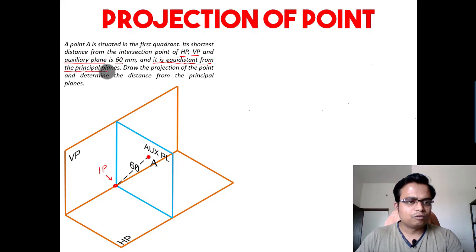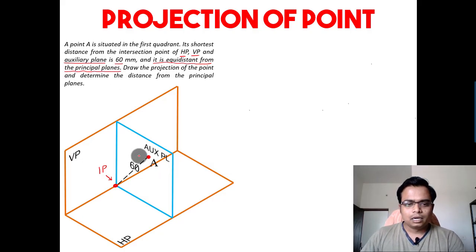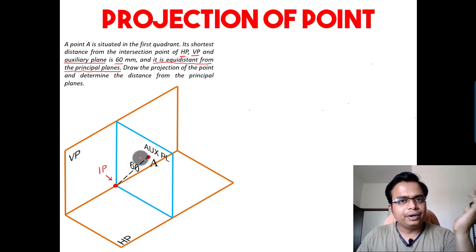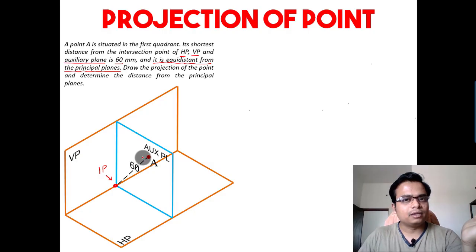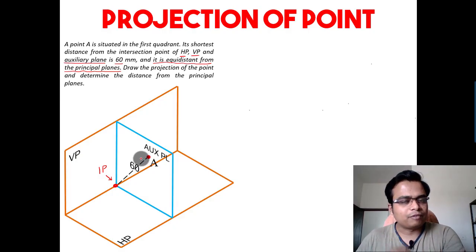There is one more statement: it is equidistant — that means point A is equidistant from the principal planes. This point has been positioned in such a manner that it is equidistant from both HP as well as VP. Whenever we speak about principal planes, that's where we have the principal views in the form of front view and top view.